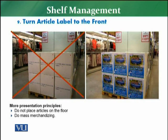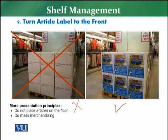The ninth principle is about turning article labels to the front. The way you present the product: one example is a 'yes' and the other is a 'no.' When you see the facing of the product correctly, you know what it is — juice, tea, detergent, powder. But if the label is not facing front, you do not know what the product is about. Turning the article label to the front is one of the key rules, so the customer can clearly identify the product from its packaging.